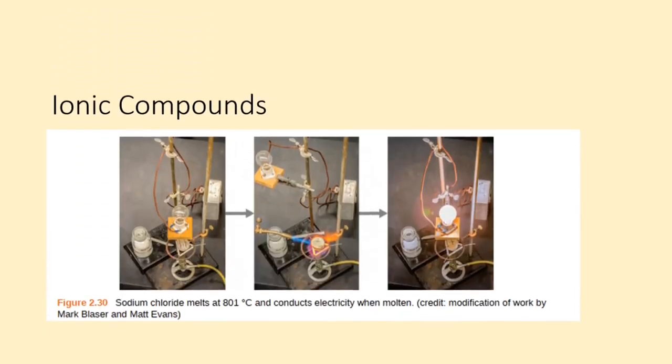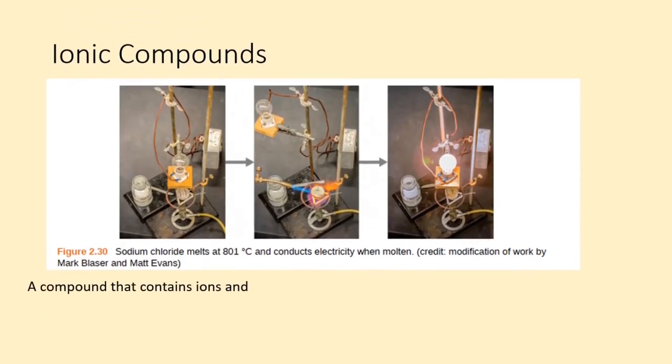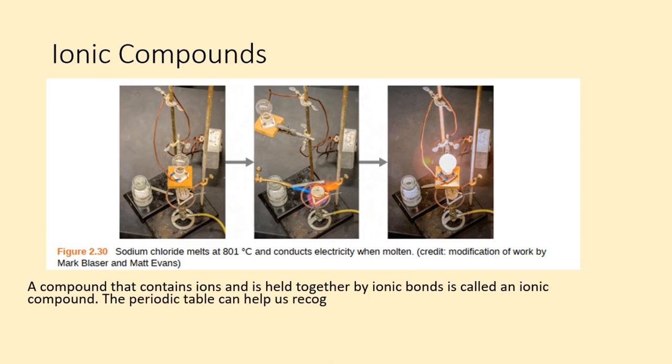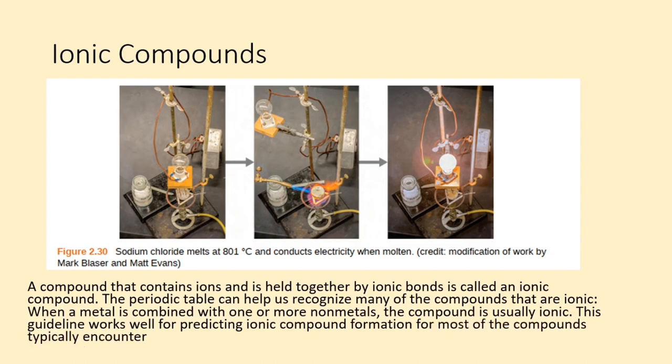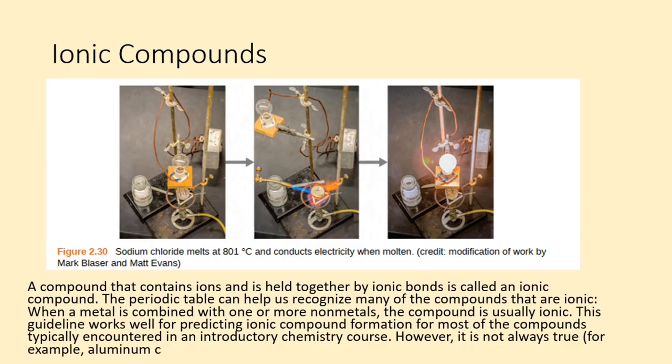Ionic compounds. The compound that contains ions and is held together by ionic bonds is called an ionic compound. The periodic table can help us recognize many of the compounds that are ionic. When a metal is combined with one or more non-metals, the compound is usually ionic. This guideline works well for predicting ionic compound formation for most of the compounds typically encountered in an introductory chemistry course. However, it is not always true. For example, aluminum chloride is not ionic.